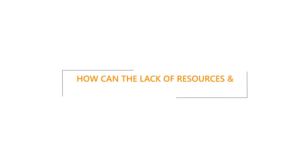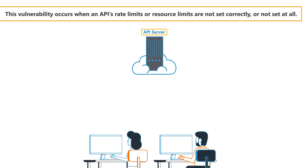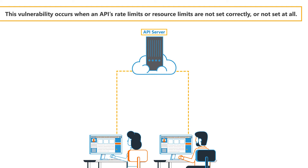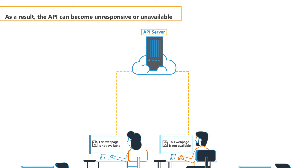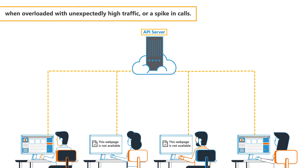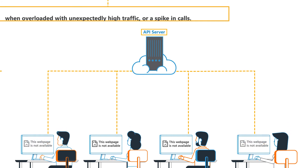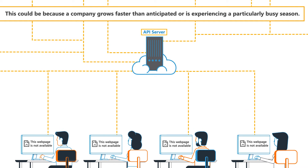How can the lack of resources and rate-limiting vulnerability happen? This vulnerability occurs when an API's rate limits or resource limits are not set correctly or not set at all. As a result, the API can become unresponsive or unavailable when overloaded with unexpectedly high traffic or a spike in calls. This could be because a company grows faster than anticipated or is experiencing a particularly busy season.